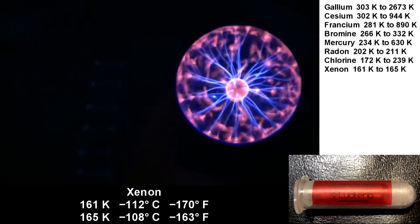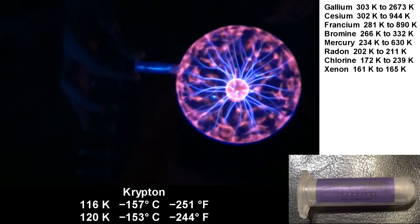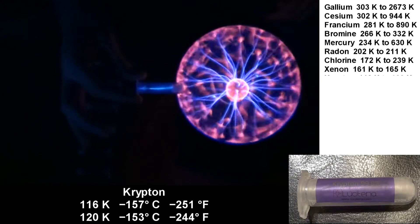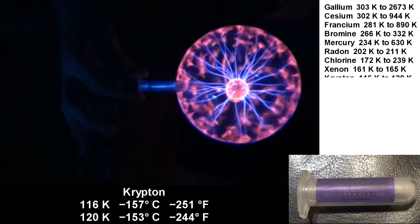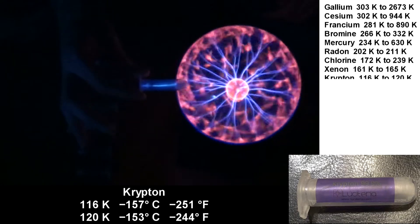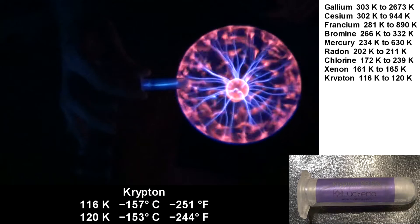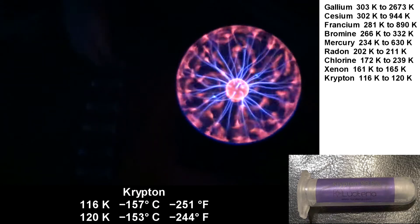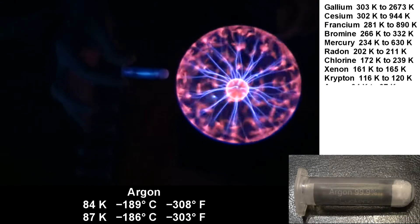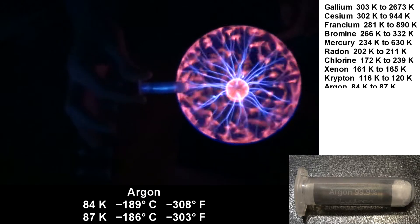Now we have Krypton. And no, this is not from Superman's home planet. It's a liquid from 116 Kelvin up to 120 Kelvin. Argon is a liquid from 84 Kelvin to 87 Kelvin.